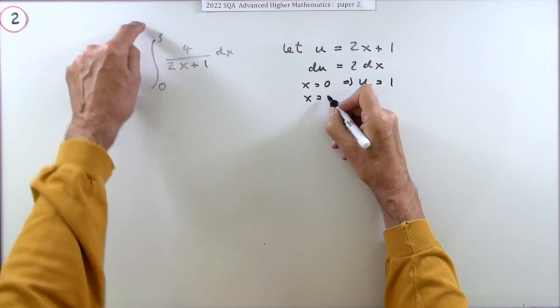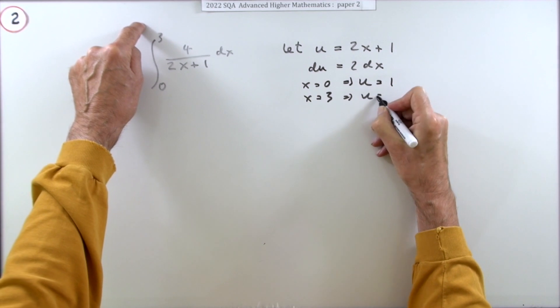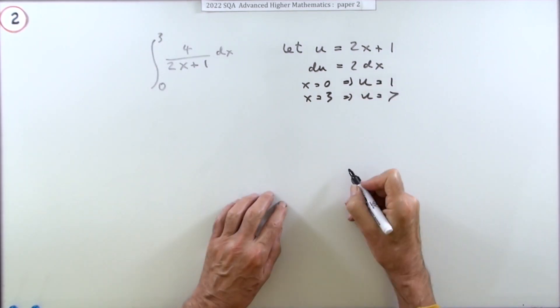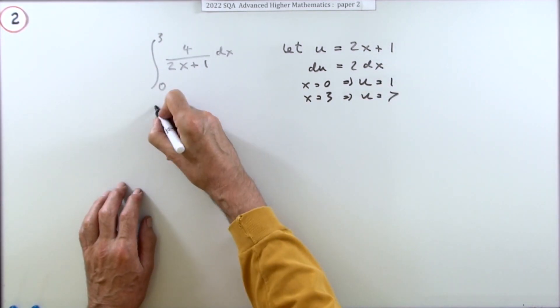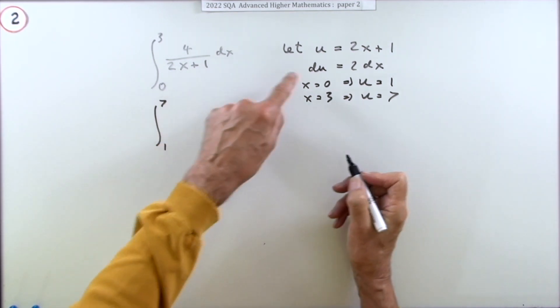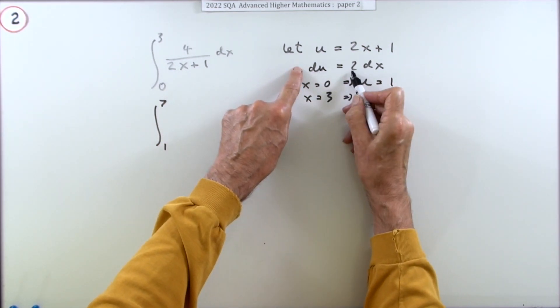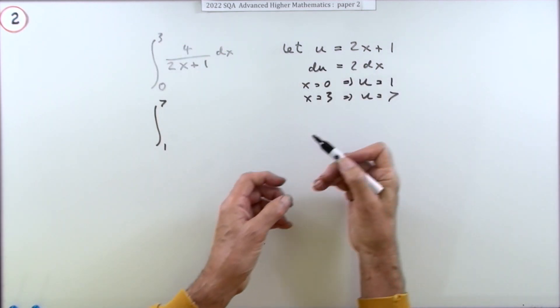Lower limit when x is zero, u would be one, and when x is three, u would be seven. Now carry out the substitution but it's going to go from one to seven now. I want a du. To write du I need to find a 2 dx to take out.